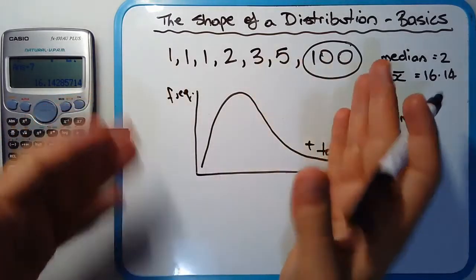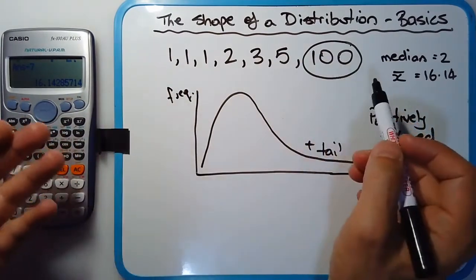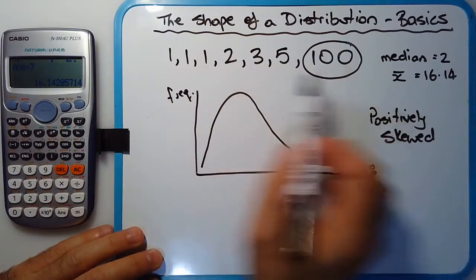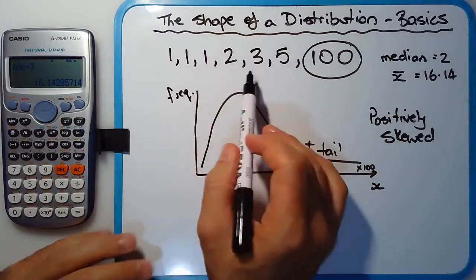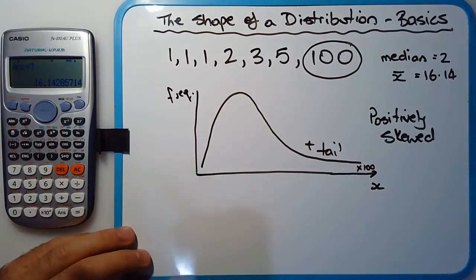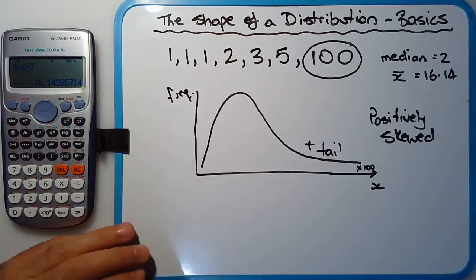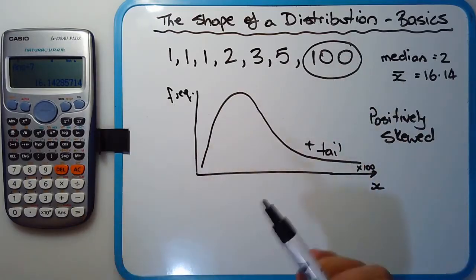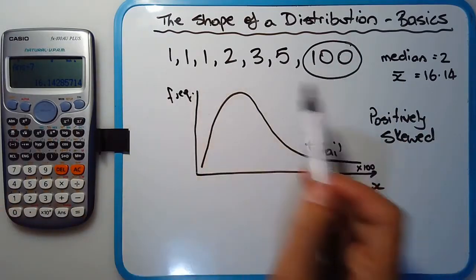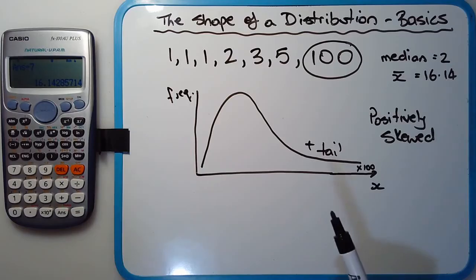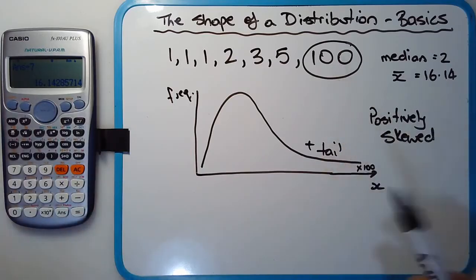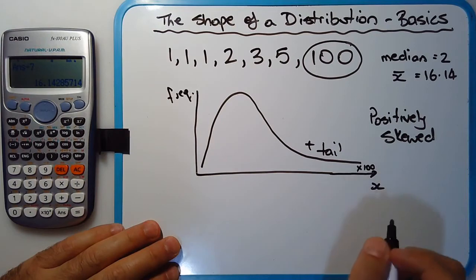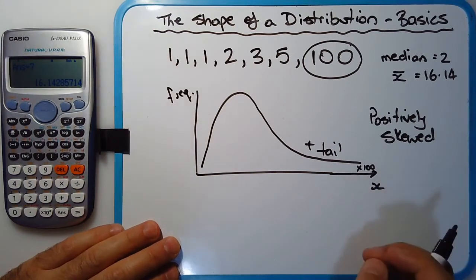For example, if these are test results and seven students took an exam, one student got 100% and the other students got extremely low scores. One would have to ask the question: what happened? Did the one that got 100% cheat? Was the exam so hard that six students could barely answer it, but one student studied extremely hard and somehow managed to get 100%? So it's really these questions that come up.